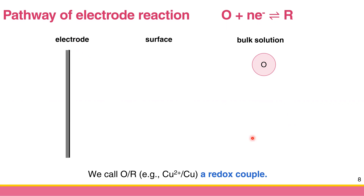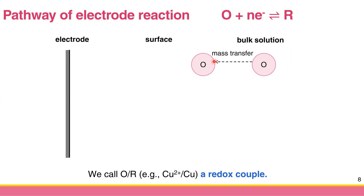Consider this setup: we have the solution and the electrode. In the reduction process, the oxidized species can receive an electron from the electrode and convert to the reduced form. The first step is that the species from the bulk solution have to undergo mass transfer to come close to the electrode.